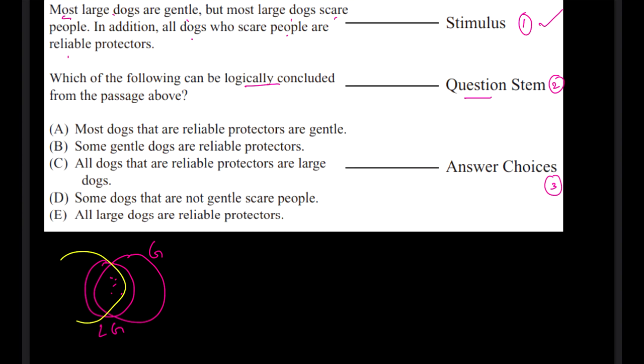I can make a circle like this stating that these all are gentle and this is a circle of gentle. But most large dogs scare people, so there is yet another circle we can draw. Most large dogs scare people. And in addition, all dogs who scare people are reliable protectors. So that means this yellow circle will completely come inside the blue color which resembles the reliable protector. So all the dogs who scare are reliable protectors. So this eventually brings this area inside reliable protector.